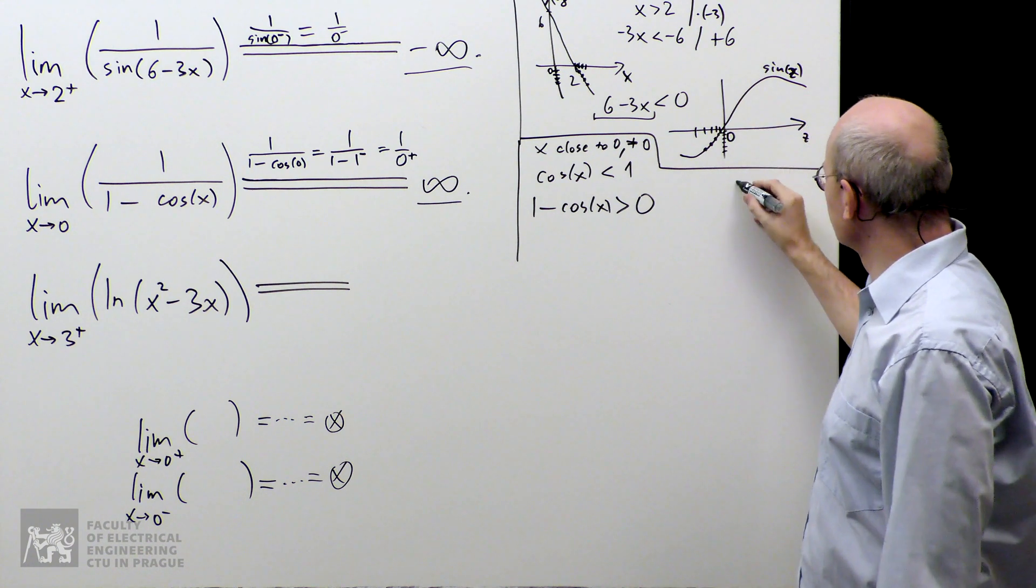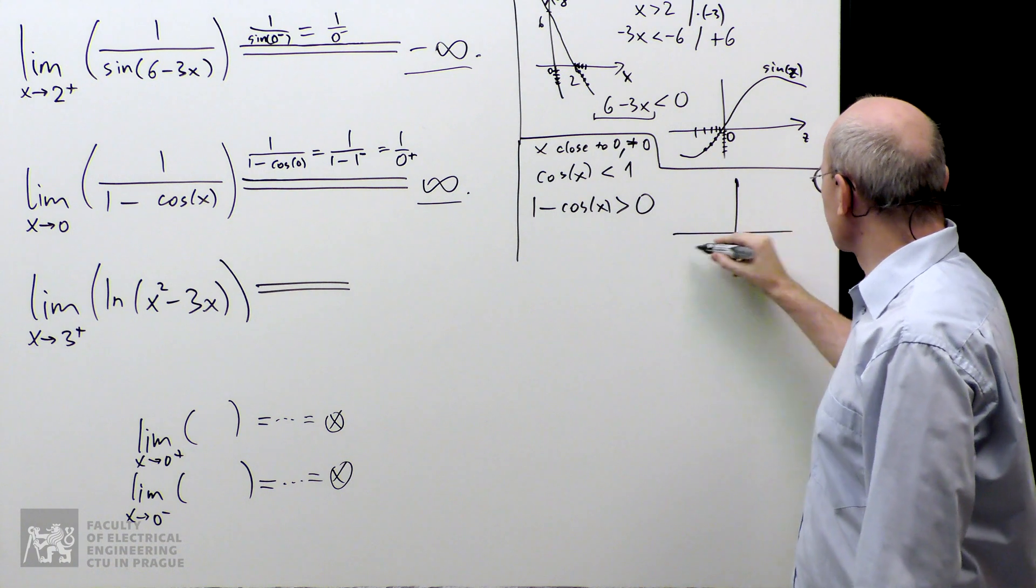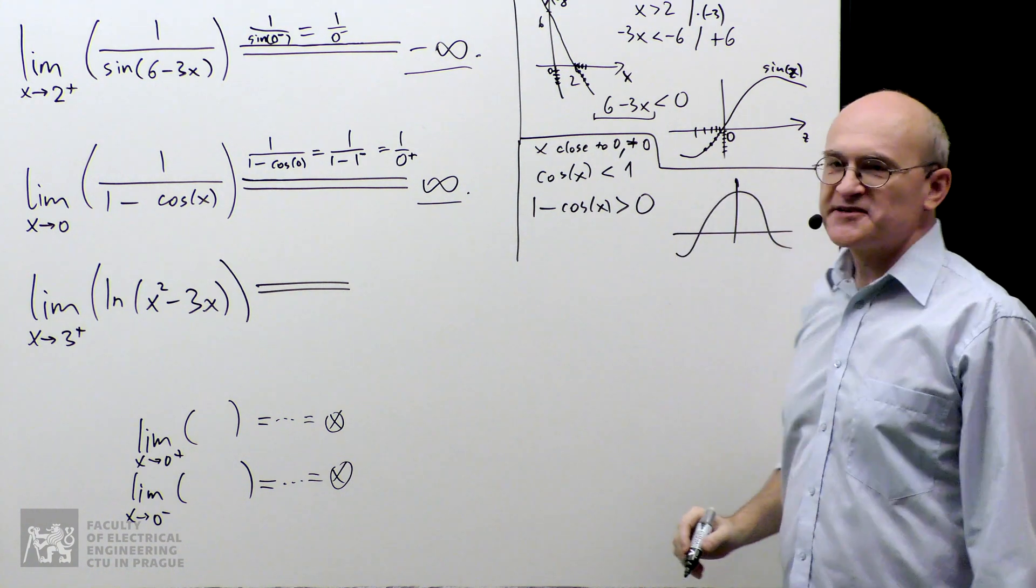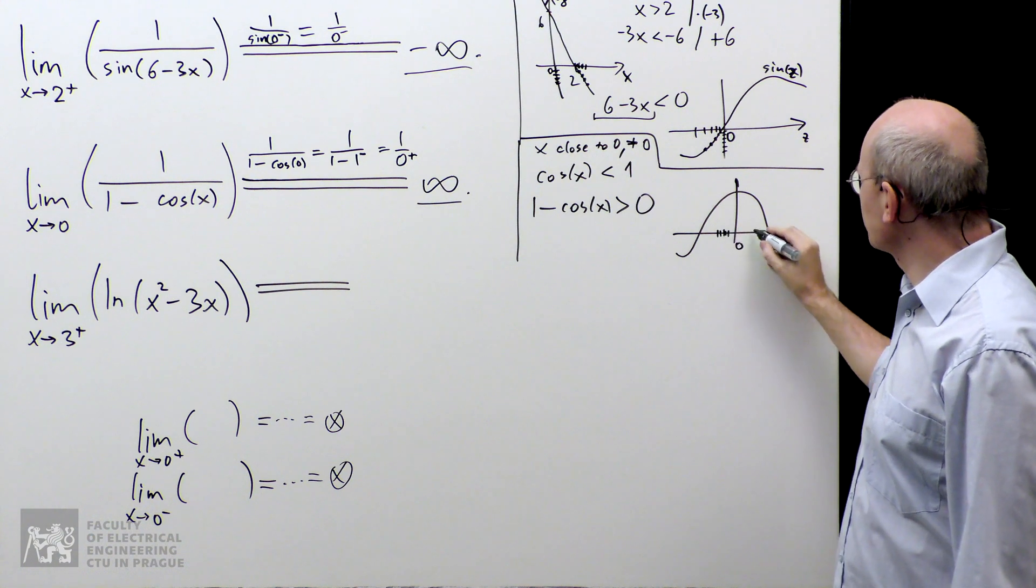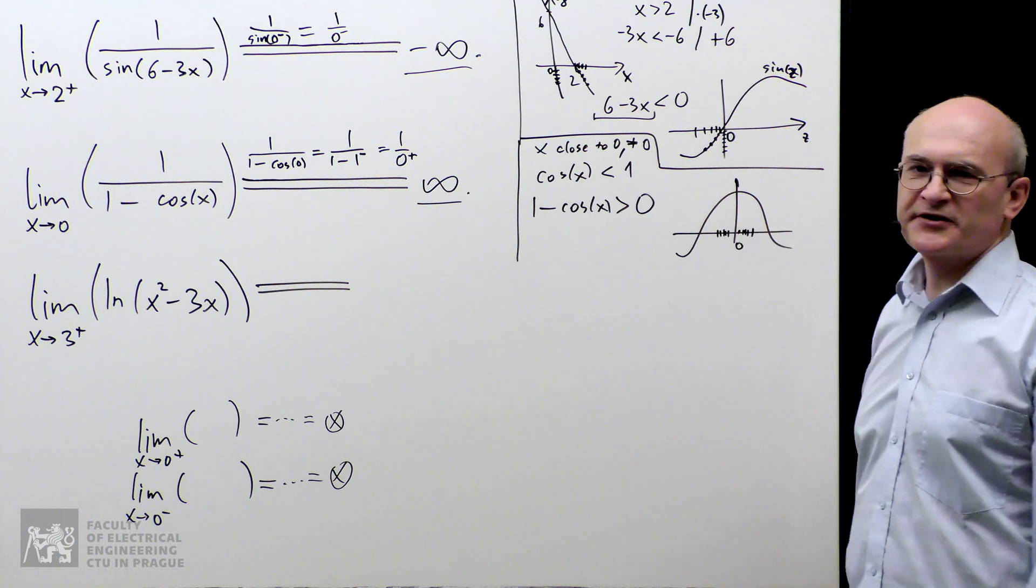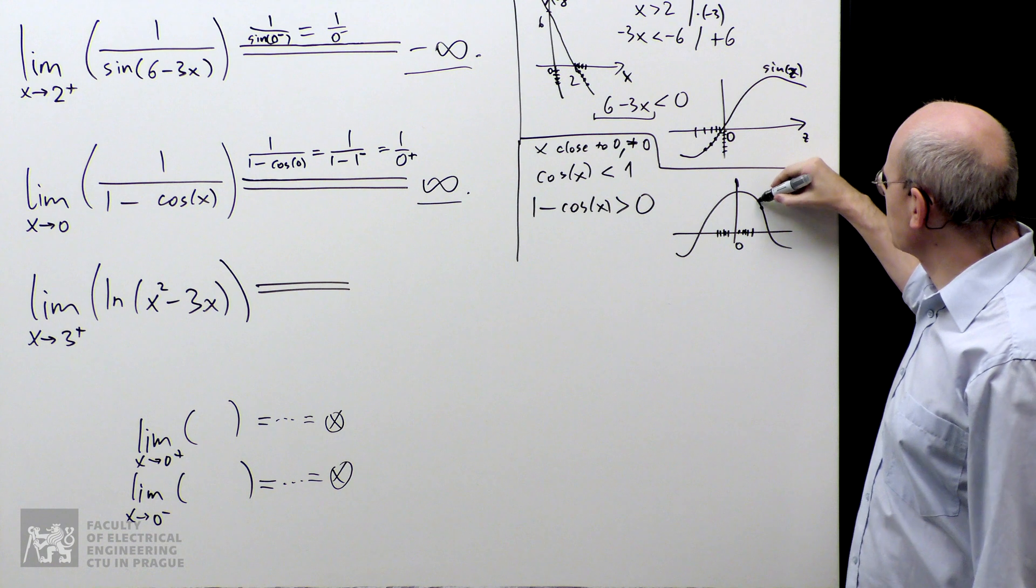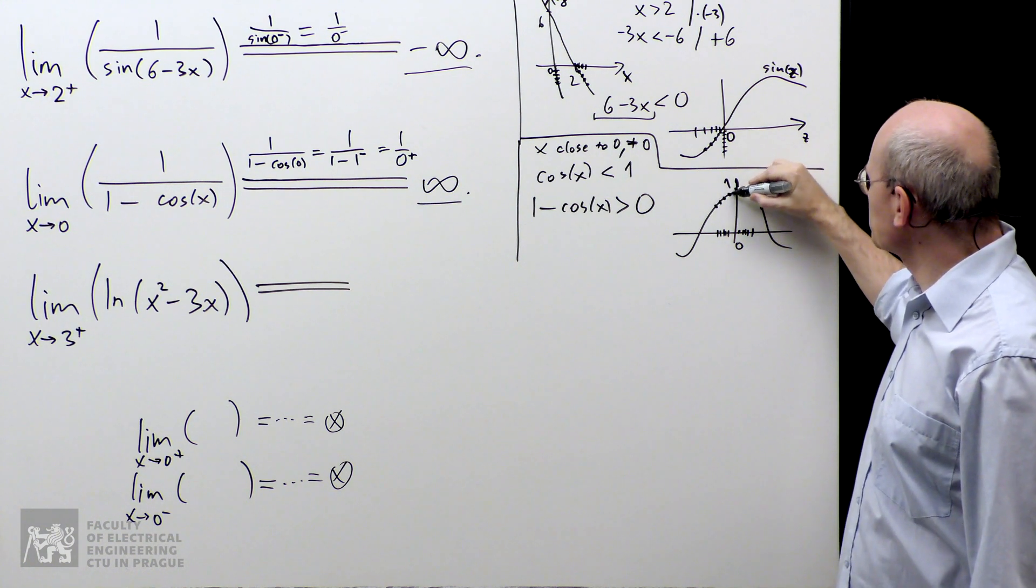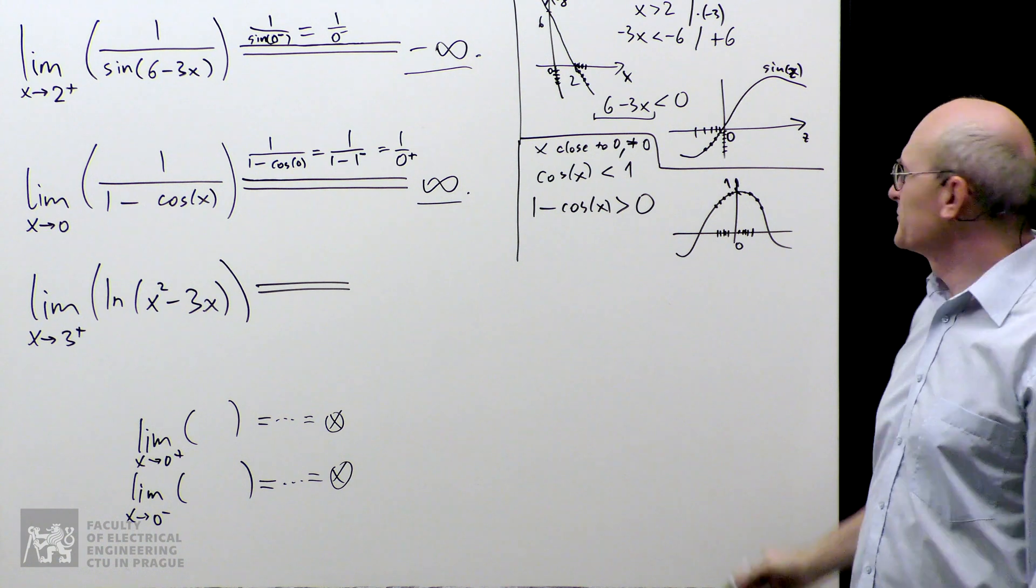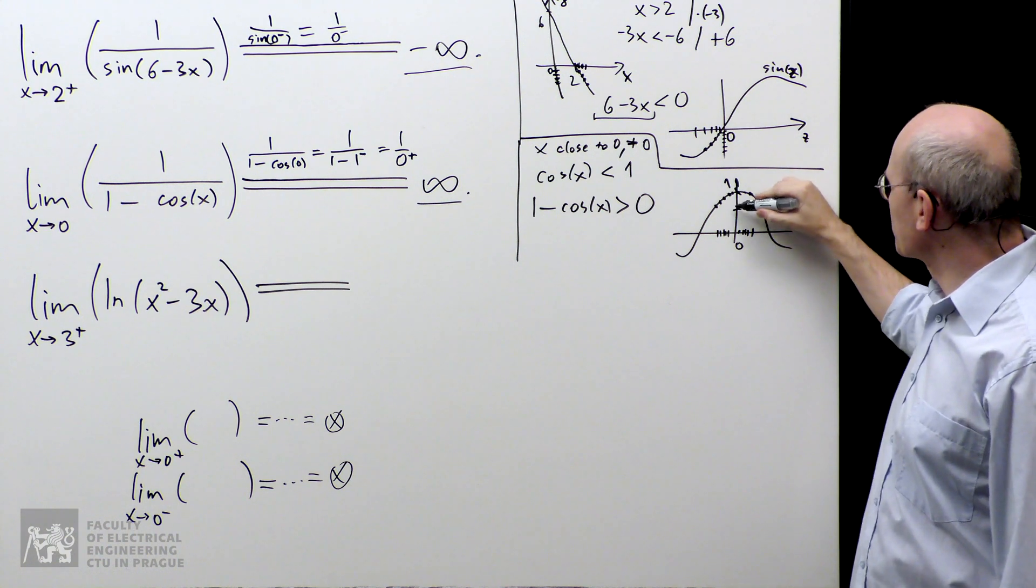We can also see this if you play with the graph of cosine. As you are approaching the origin, either from the left or from the right, it doesn't make really any difference. The cosine function approaches number 1, over here, and it always approaches it from below, from numbers which are smaller than 1, over here.